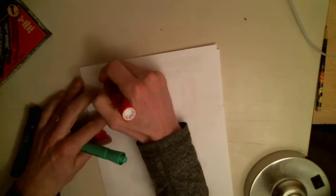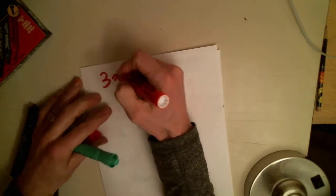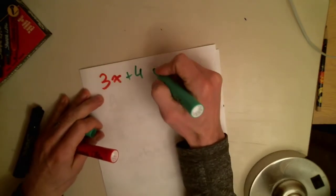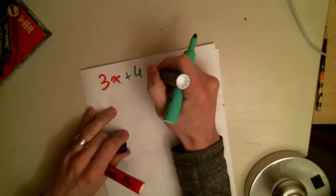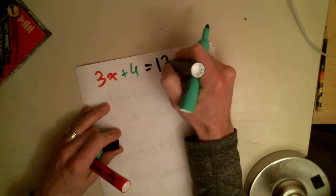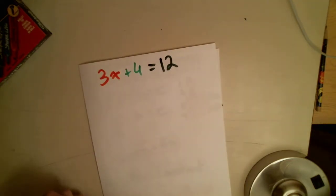Okay. Let's use some numbers now. Number one. We're going to go 3x plus 4. What should that equal? Let's make it easy. Equals 12. Okay. Now, remember. What do I need to get rid of first? The constant or the coefficient?